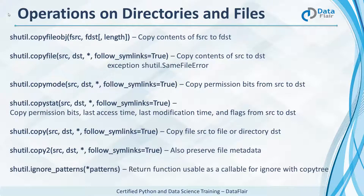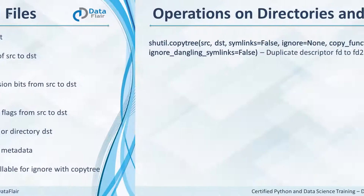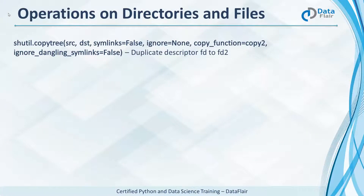ignore_patterns is a factory function that creates a function which we can use as a callable for the ignore argument with copytree. copytree recursively copies an entire directory tree and returns the destination directory.